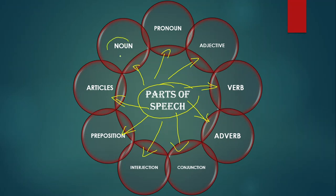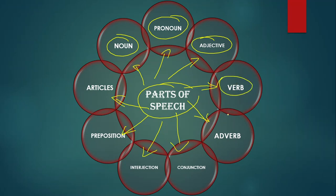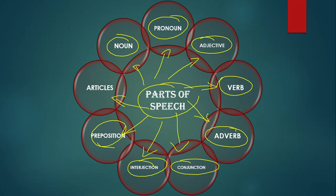Parts of Speech are nine in total — some grammarians say eight, but I agree with those who say nine, because 'a', 'an', and 'the' are definitely parts of speech. The word is divided into different kinds: noun, pronoun, adjective, verb, adverb, conjunction, interjection, preposition, article. Noun: name of a person, place, or thing. Pronoun: used in place of a noun. Adjective: adds to the meaning of noun or pronoun. Verb: shows action, state, condition. Adverb: adds to verb, adjective, or another adverb.